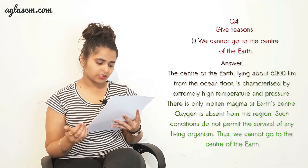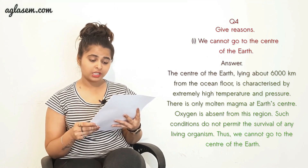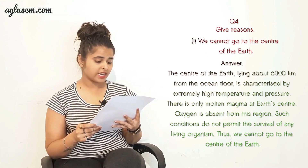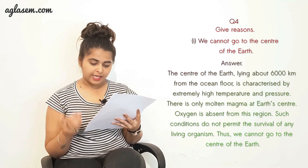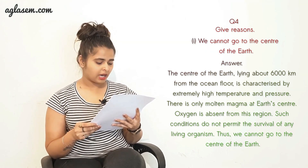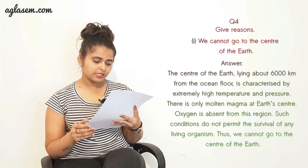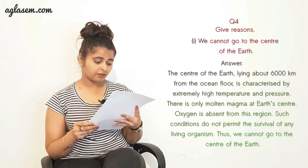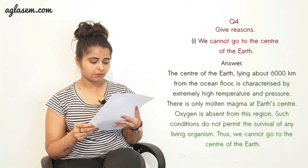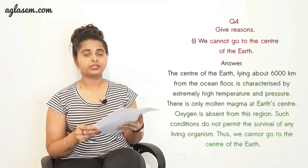The fourth question - Give reasons. Part one: Why can we not go to the center of the earth? The center of the earth, lying about 6,000 kilometres from the ocean floor, is characterized by extremely high temperature and pressure. There is only molten magma, and oxygen is absent from this region. Such conditions do not permit the survival of any living organism, thus we cannot go to the center of the earth.